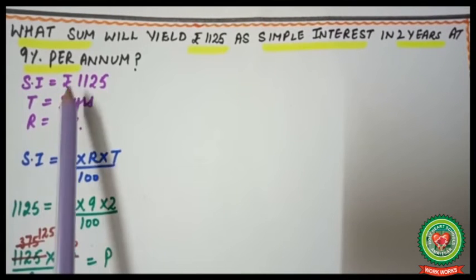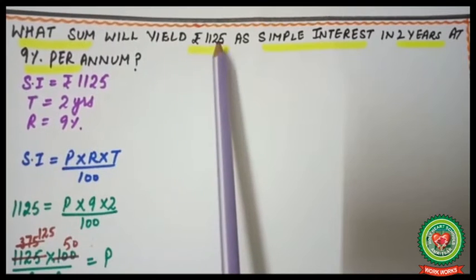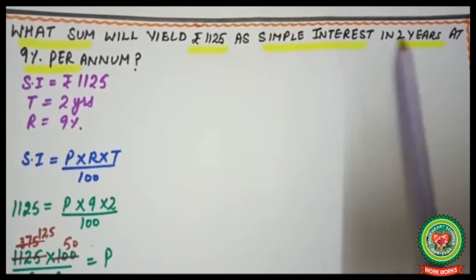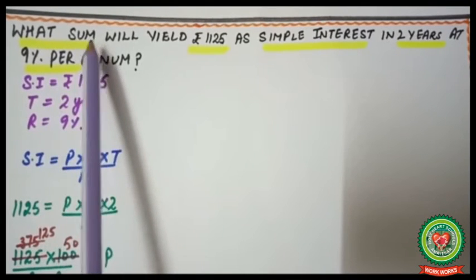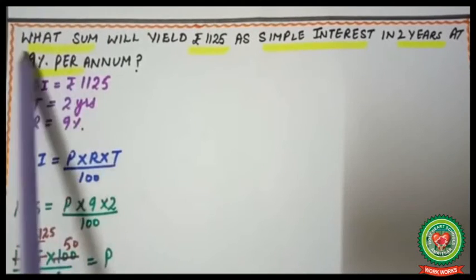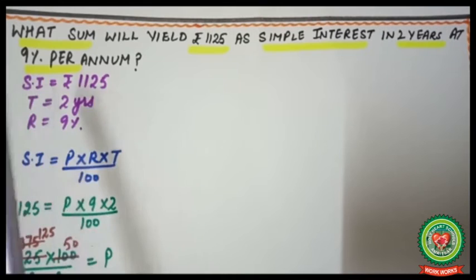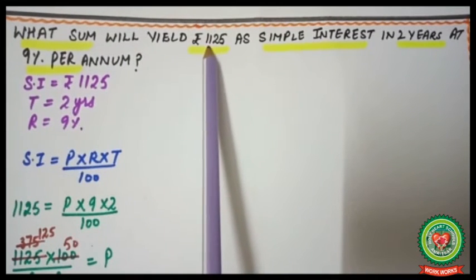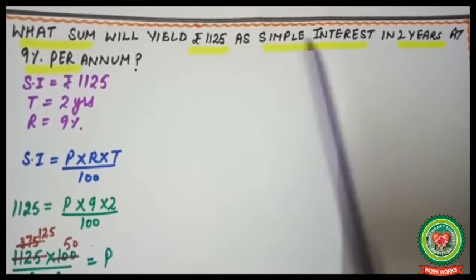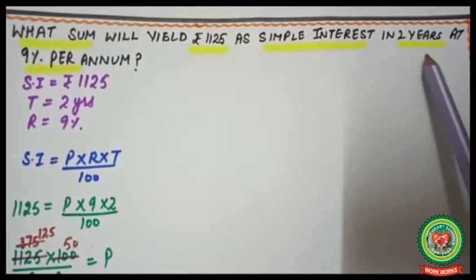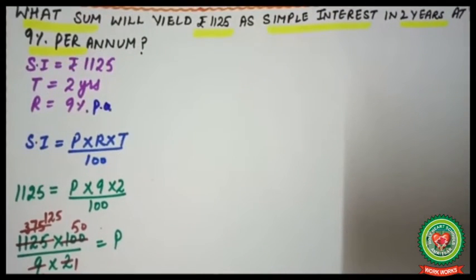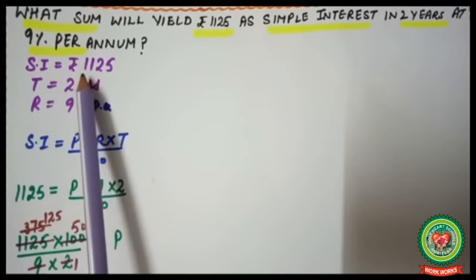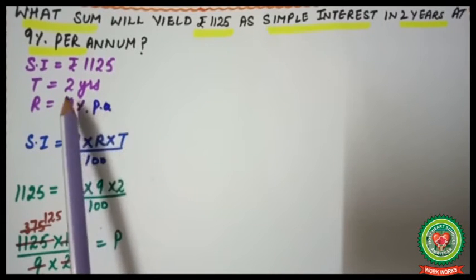The next example reads: what sum will yield rupees 1125 as simple interest in two years at 9% per annum? 'What sum' means we need to find the principal. SI = rupees 1125, time T = 2 years, and rate R = 9% per annum are all given.